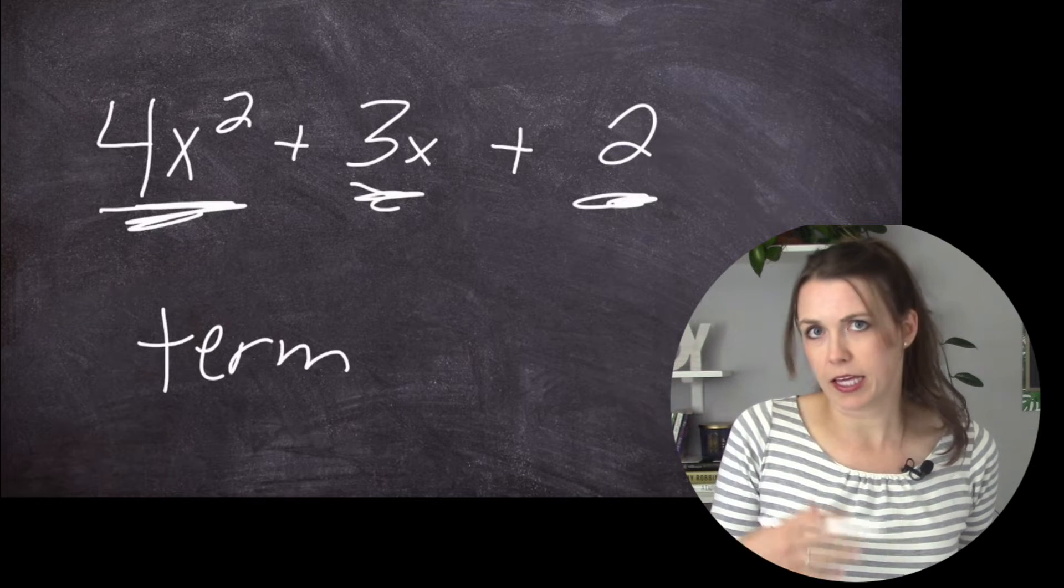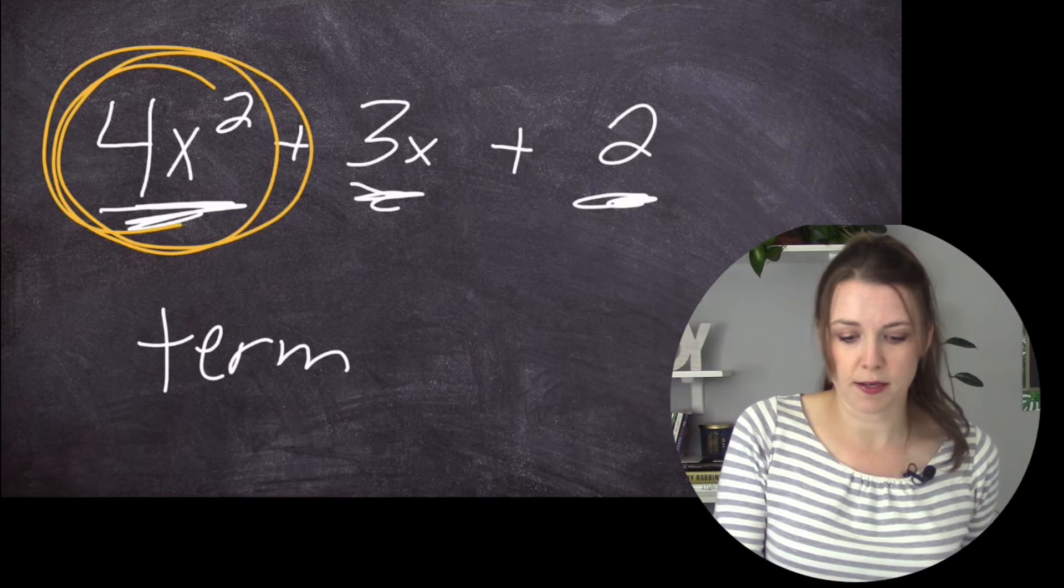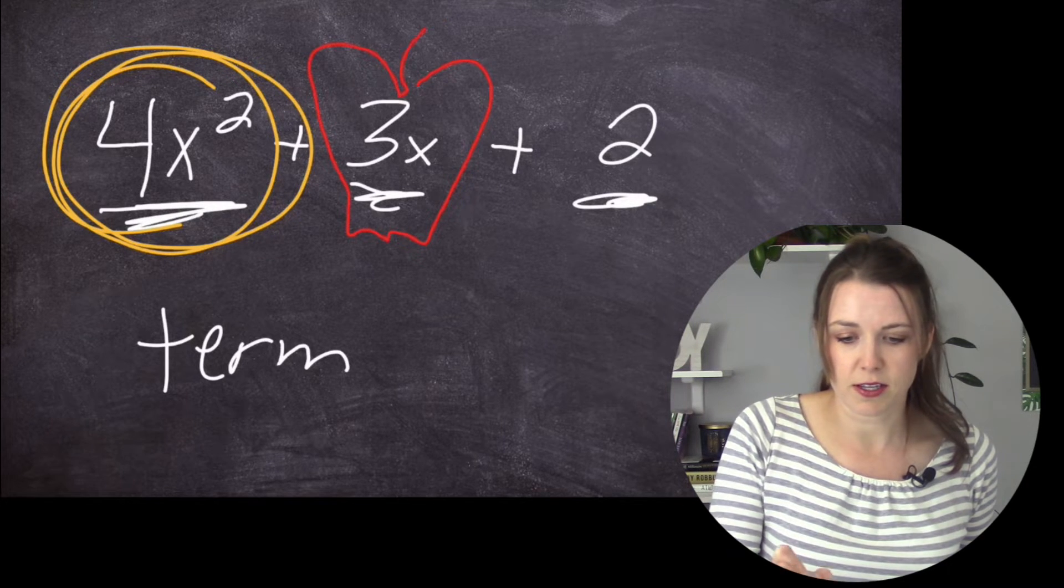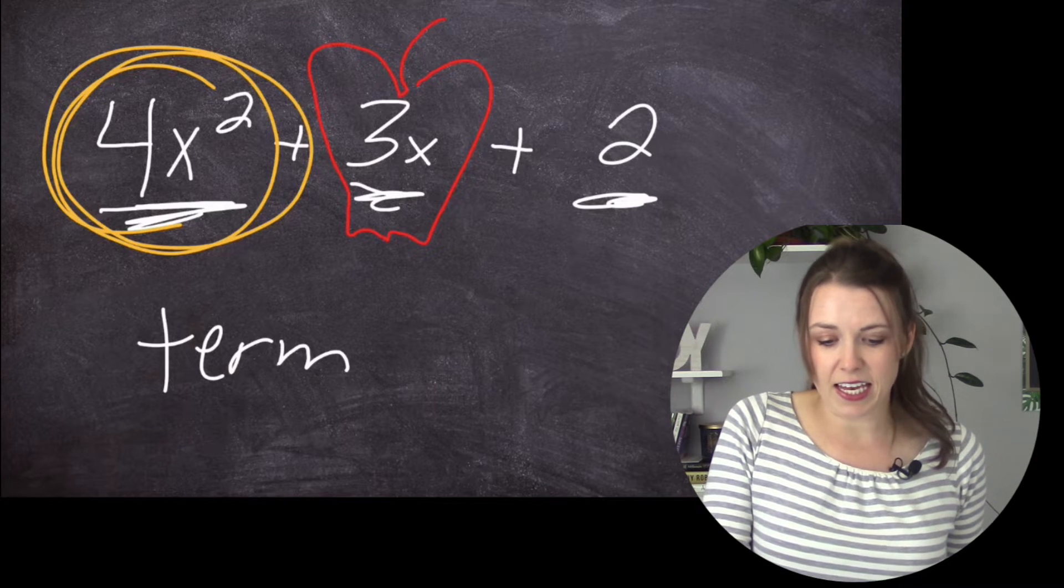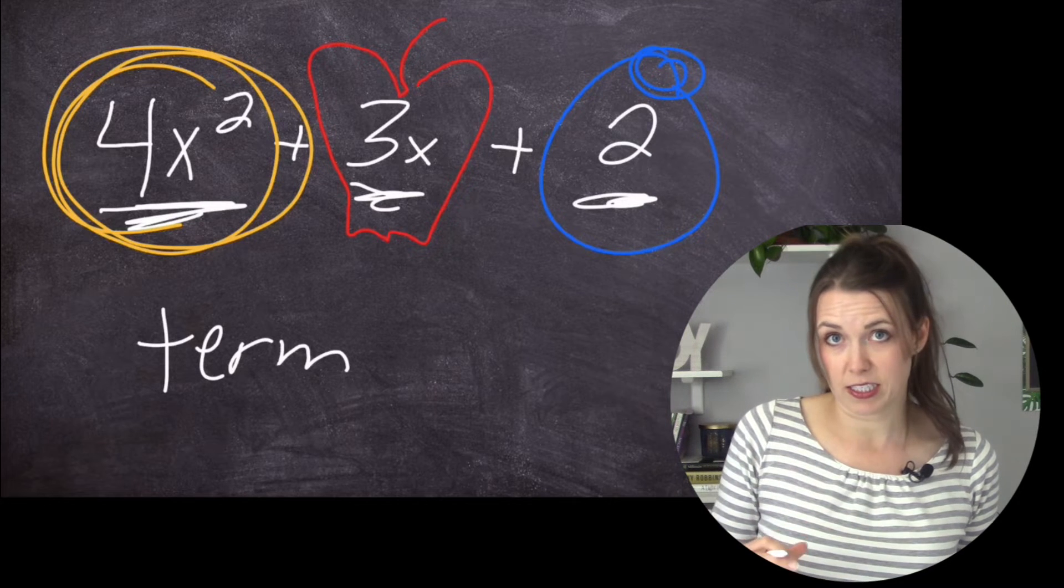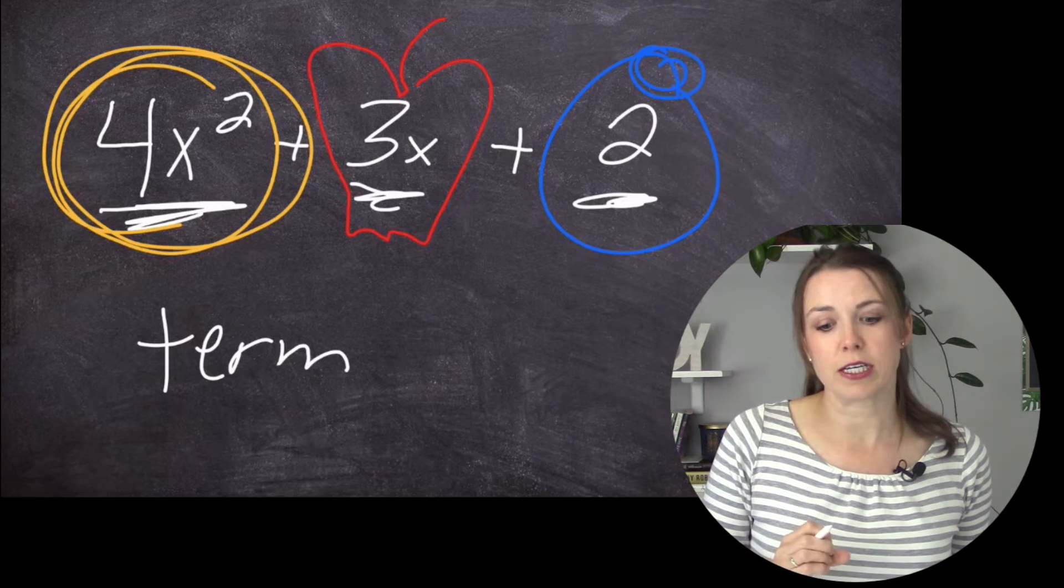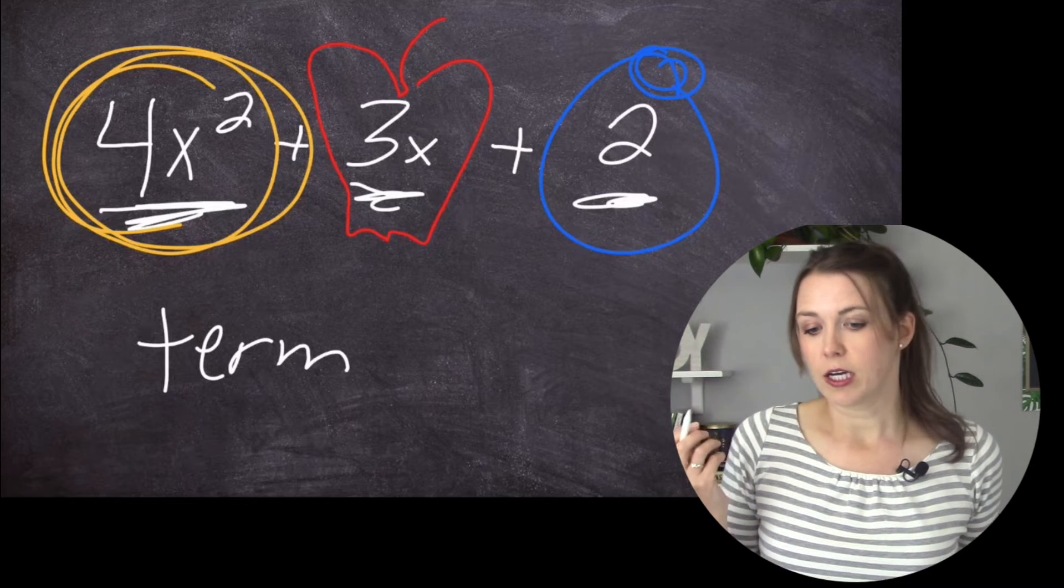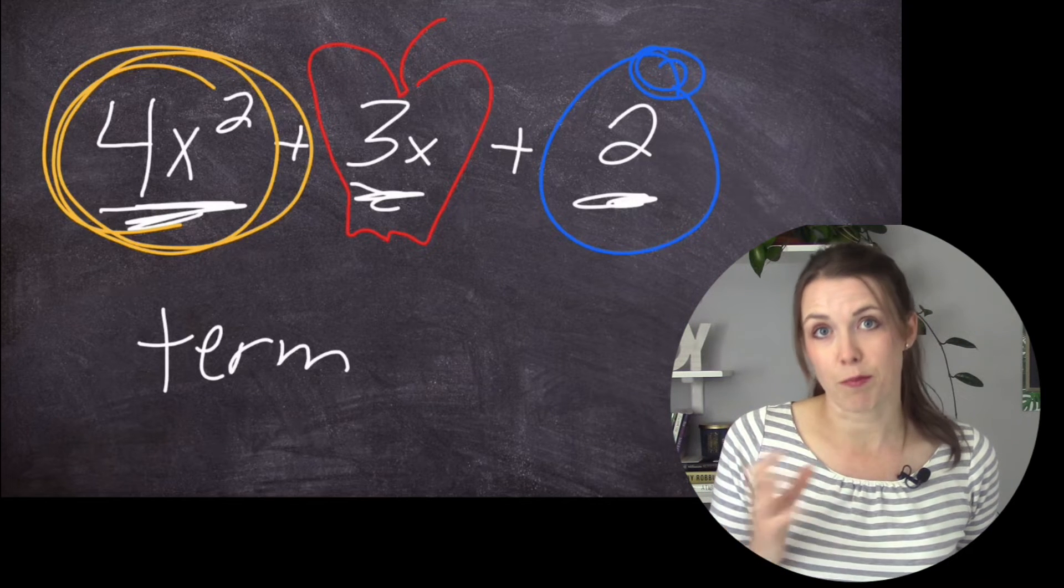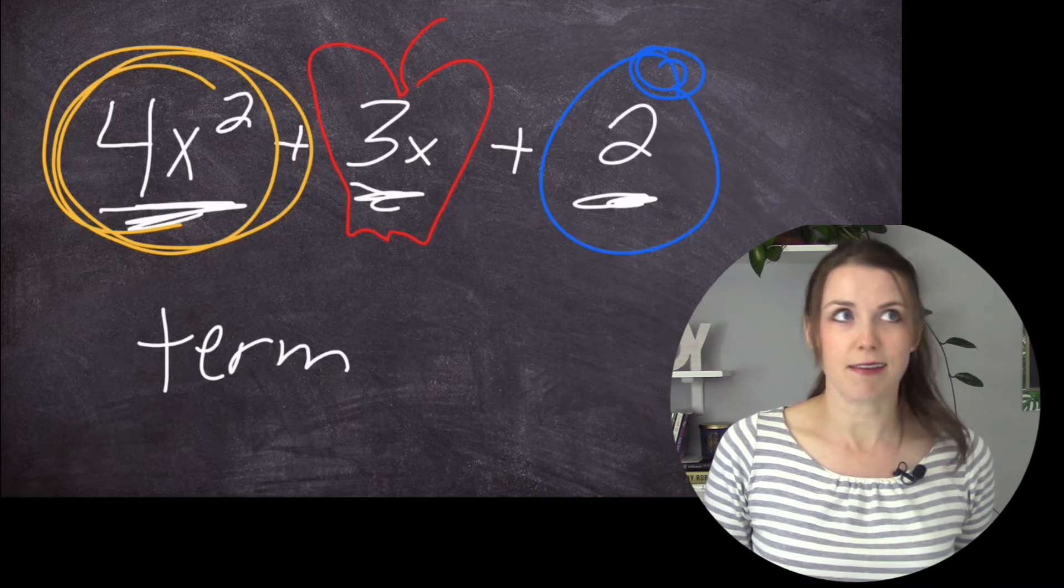Because think about it like it's a fruit salad. The 4x², that represents the oranges. The 3x, that represents our apples. And then the 2 represents the blueberry. So they're all very different. And so we've got a fruit salad in our polynomial here, but we can't actually turn an apple into an orange, or we can't turn a blueberry into an apple. We have to keep them separate. But if we have more apples, we can add our apples together. So let's do that.